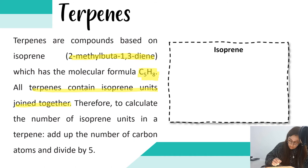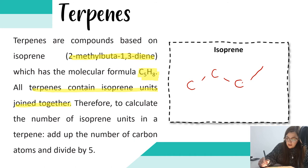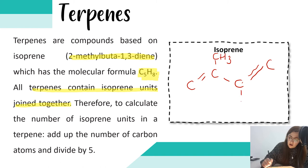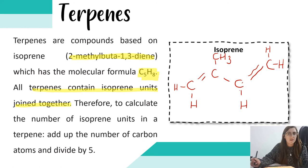A unit of isoprene is 2-methyl-buta-1,3-diene. We have four carbons — that's why we have 'buta'. It's 1,3-diene, so we have a double bond at carbon 1 and a double bond at carbon 3. We have a methyl group at carbon 2. The rest of the carbons have hydrogens attached until they have four bonds. You have to be able to draw the isoprene unit as well as name it — remember the name is 2-methyl-buta-1,3-diene.